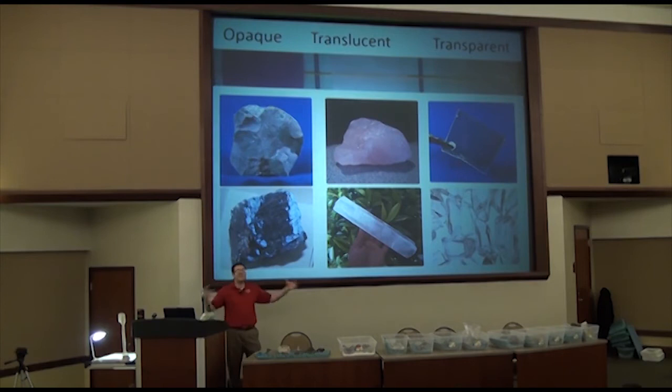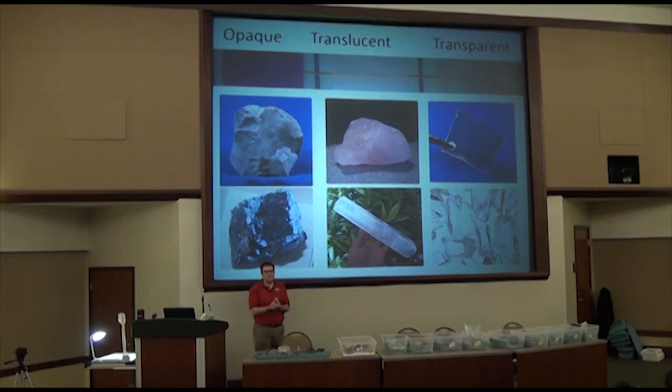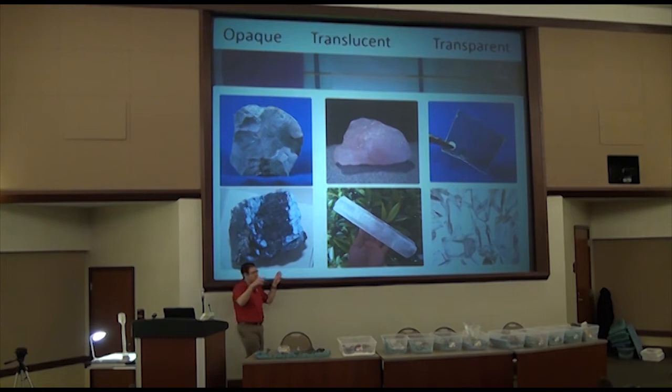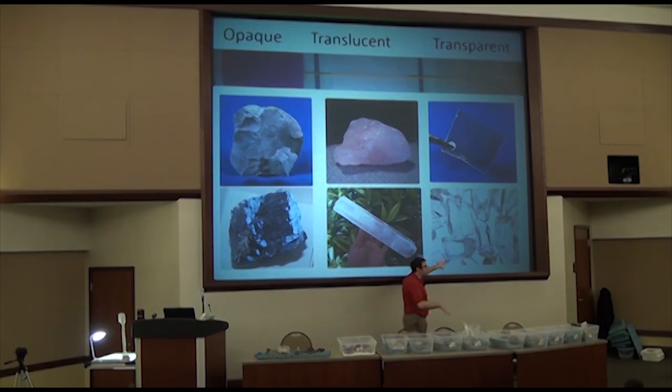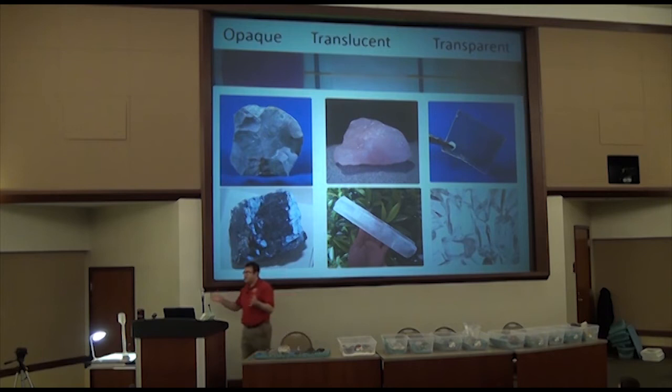Another thing we look at is whether minerals are opaque, translucent, or transparent. Opaque means no light passes through — you can't see any light through it at all. Transparent means you can almost see through it, like a piece of glass. In the middle is translucent, where light passes through but you can't see through it very clearly.